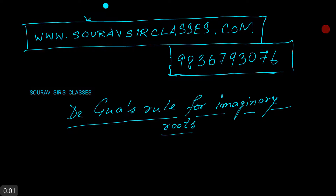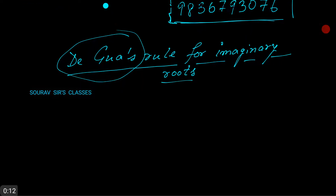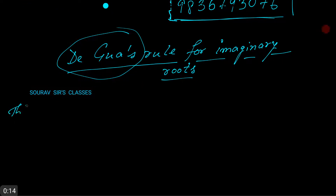Hello and welcome to this class. In this video we will be going over De Gua's rule for finding imaginary roots. So what does the rule state? Let's just begin with that. The theorem states: if R consecutive terms are absent in f(x) equal to zero...